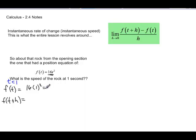t plus h is going to be 16 times 1 plus h squared, which is a little bit longer. It's going to be 16 times, and then square out 1 plus h: 1 plus 2h plus h squared, which will give us 16 plus 32h plus 16h squared.